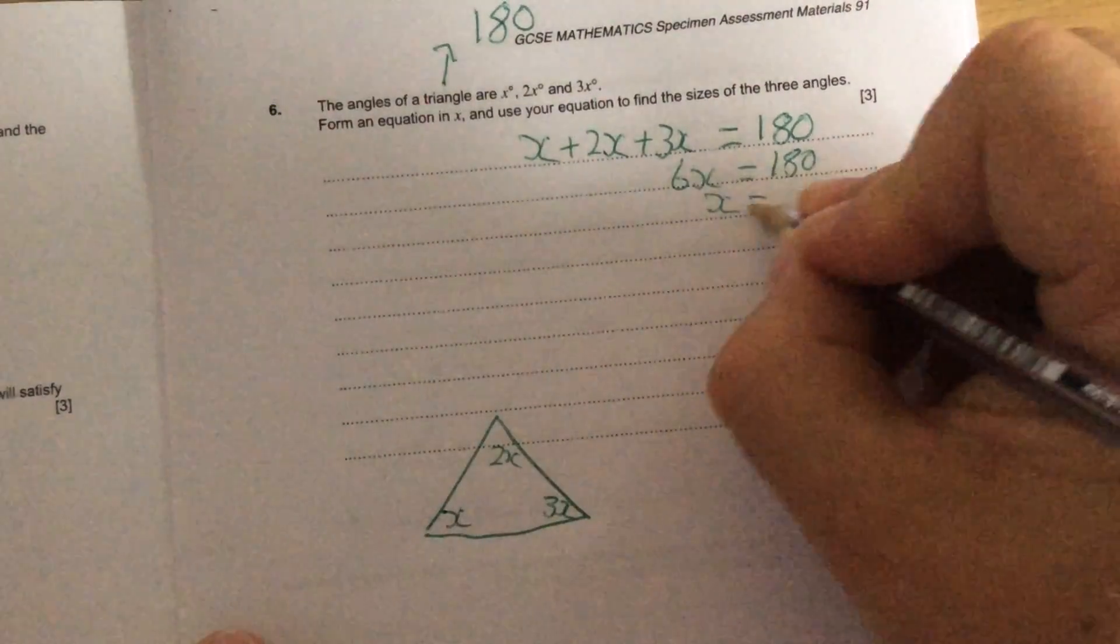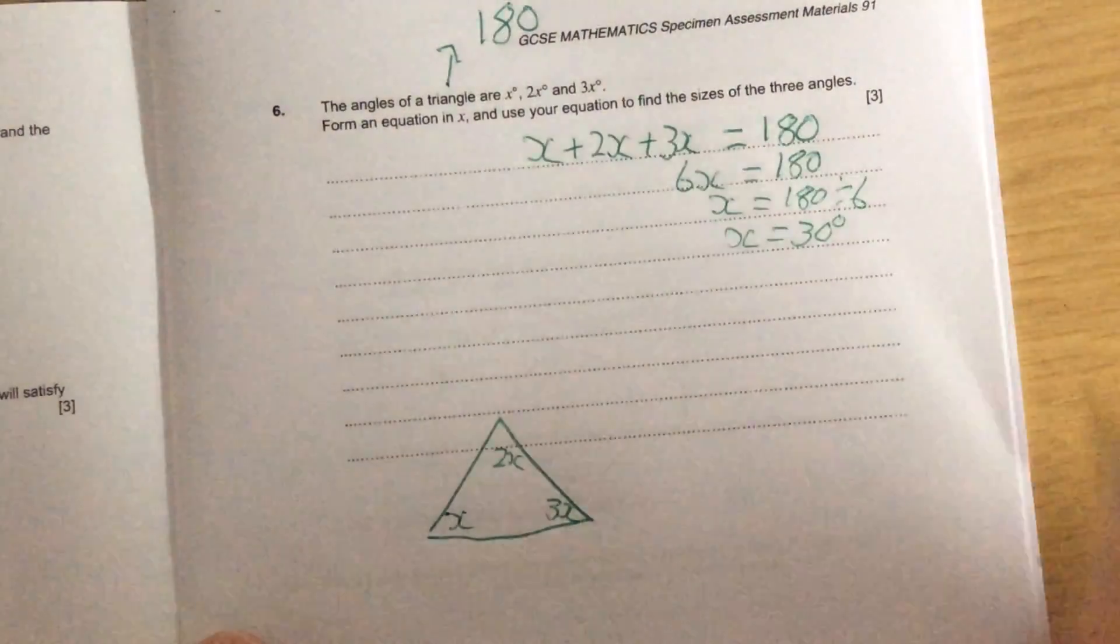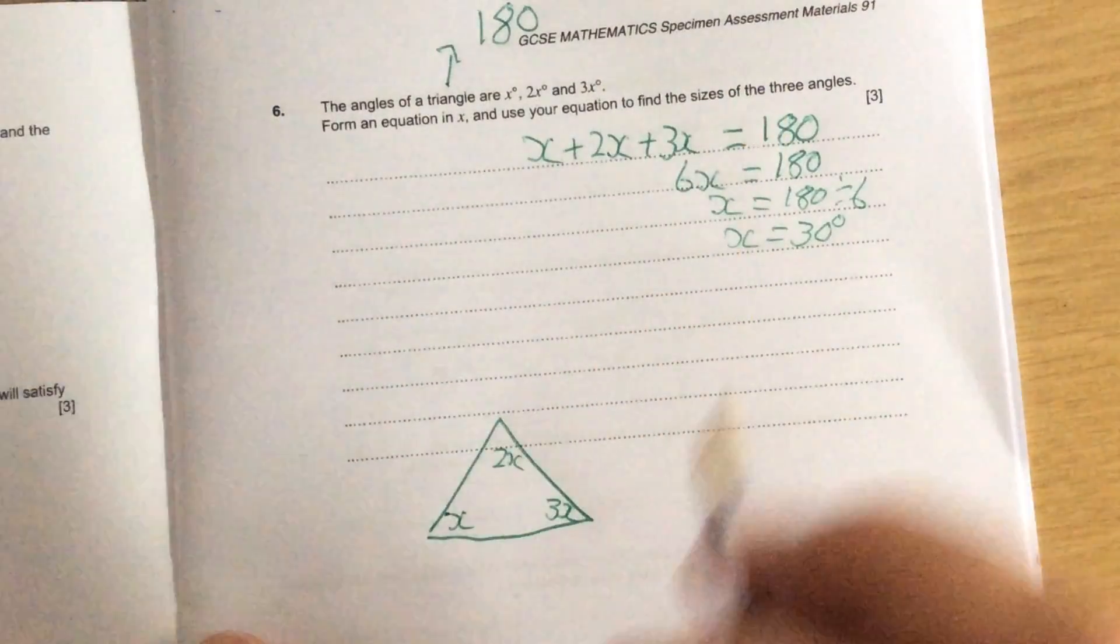So x is going to be 180 divided by 6, which is 30 degrees. But they are asking me to find the 3 angles.